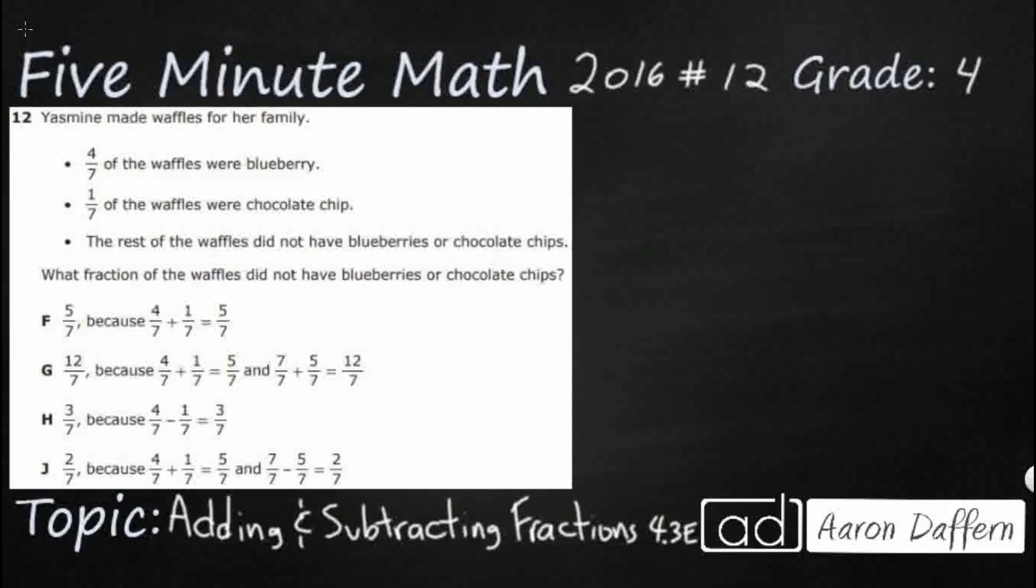We have Yasmin here and Yasmin is making waffles. As we can see, 4/7 of the waffles are blueberry, 1/7 of the waffles are chocolate chip, and the rest either have something else or they simply do not have blueberries or chocolate chips. What we're looking for here is the fraction that did not have blueberries or chocolate chips.